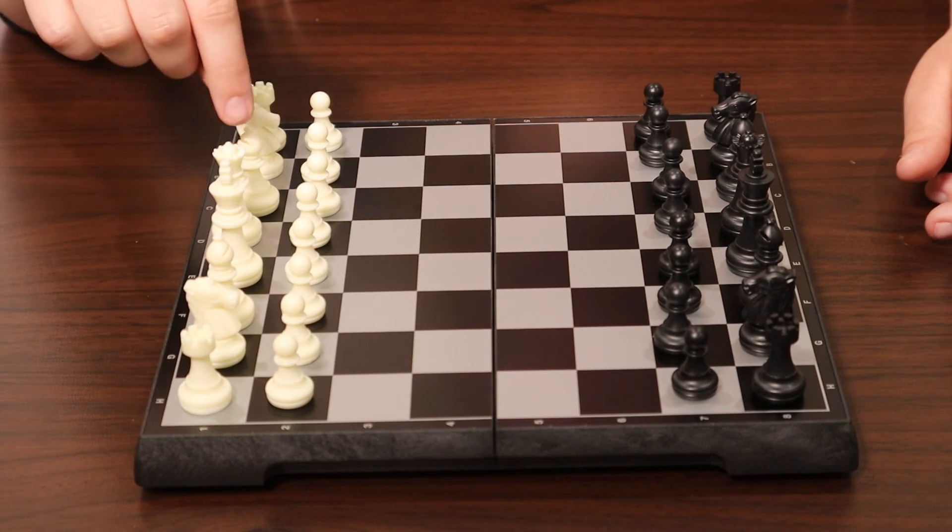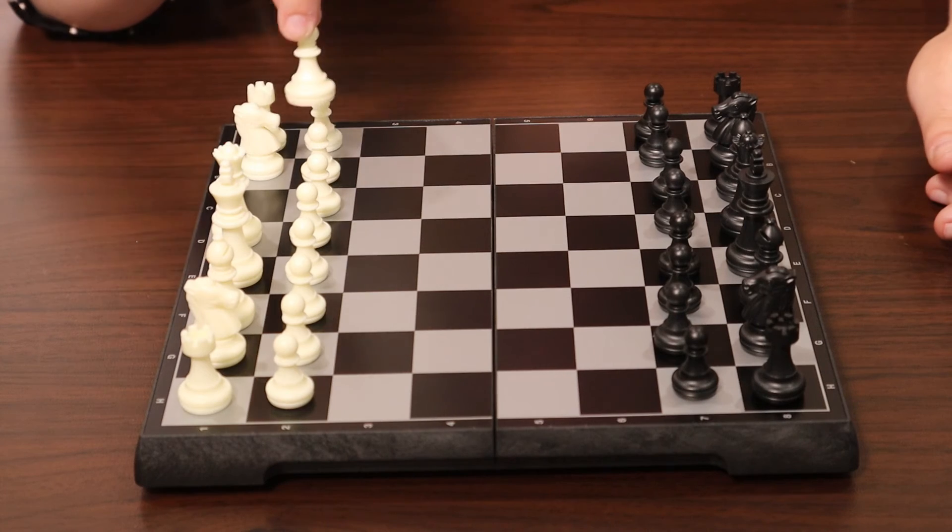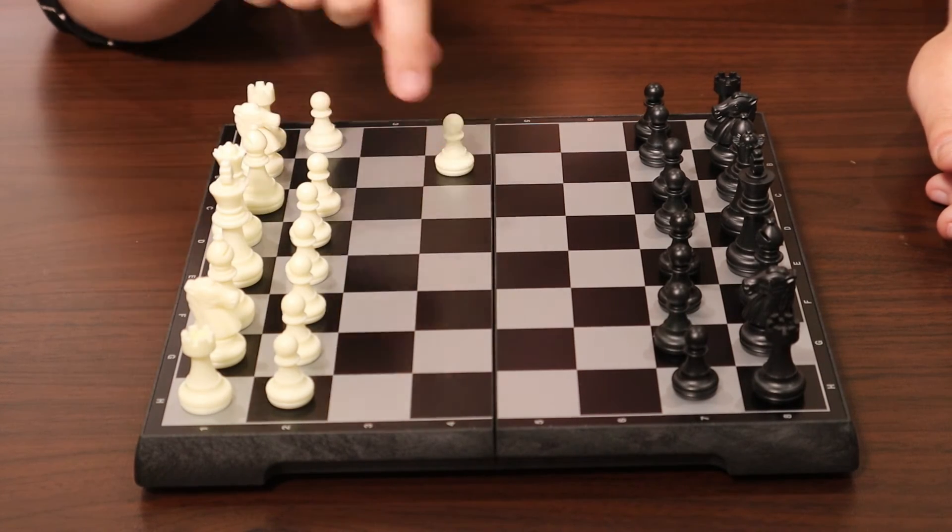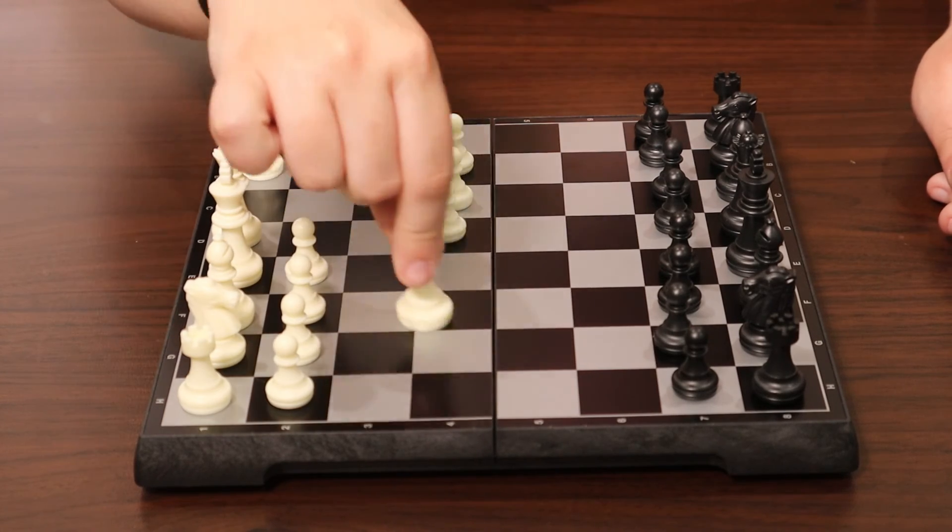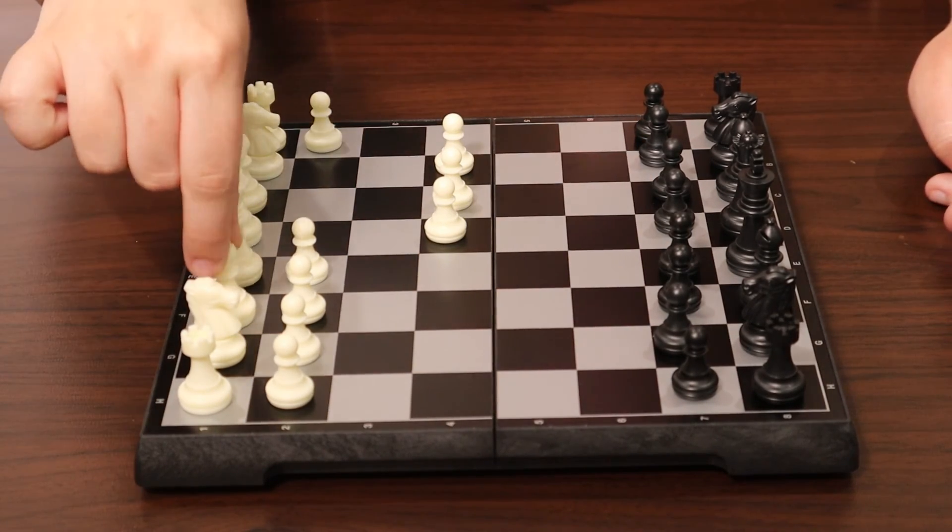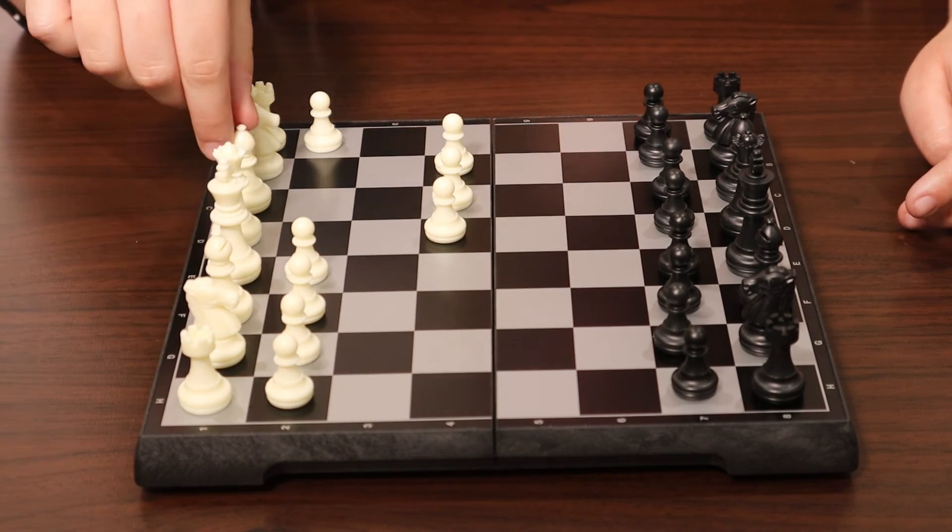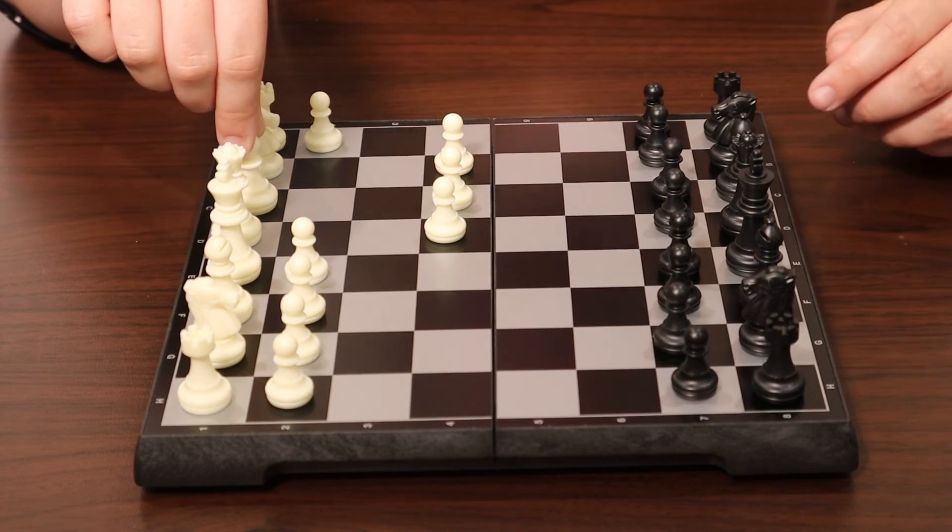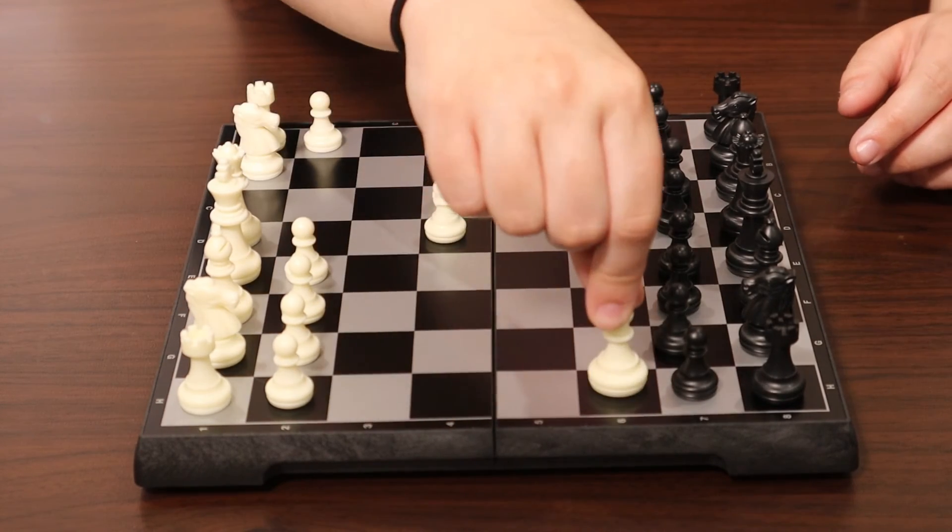The bishop moves diagonally on its color that it's on. So this bishop would move, you have to move the pawns out of the way first for it to move. But this bishop would move diagonally along the black squares. And this bishop would move diagonally along the lighter squares. The bishop can move as many pieces as you want in one move. So you can move one square or you can move all the way across.